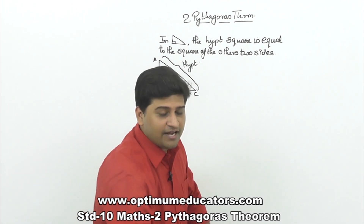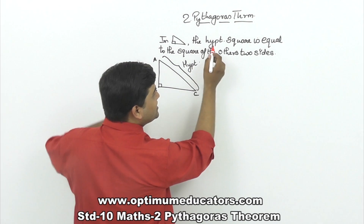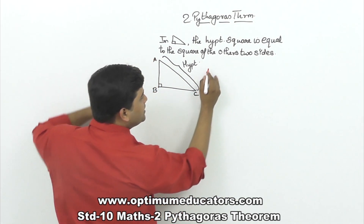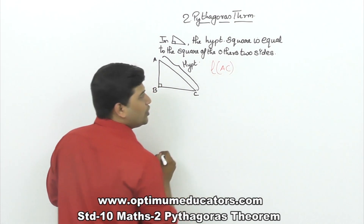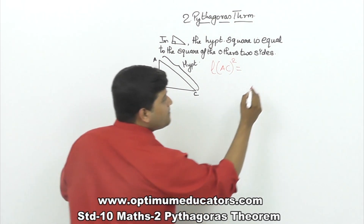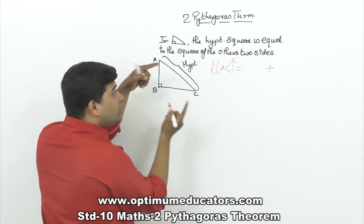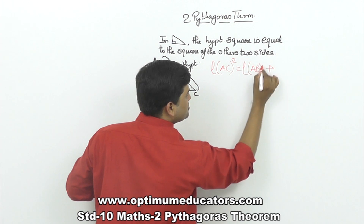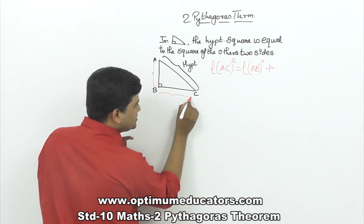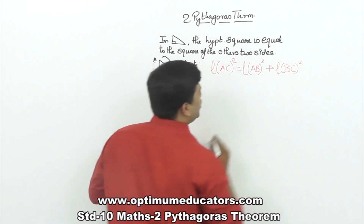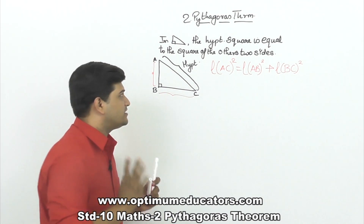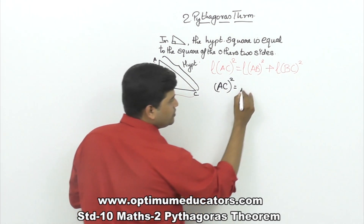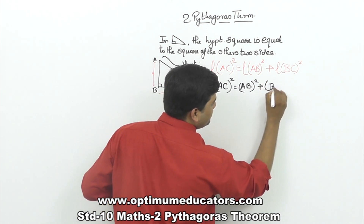So what does Pythagoras theorem say? In a right angle triangle, the hypotenuse square is equal to the square of the other two sides. Hypotenuse is nothing but length AC. So AC square equals the sum — sum means addition — of the other two sides: length AB square plus length BC square.